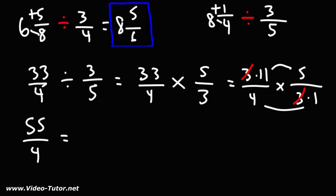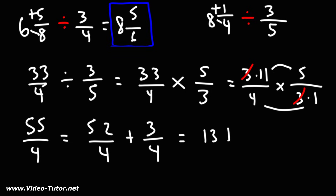Now let's convert this back to a mixed number. The highest multiple of 4 just under 55 is 52. 55 minus 52 is 3. 52 divided by 4 is 13. So once you have a whole number and a fraction, you can write it as a mixed number. This is 13 and 3 fourths. That's going to be the answer.